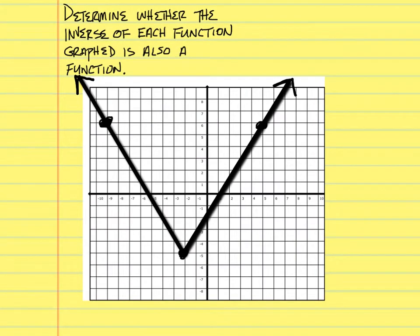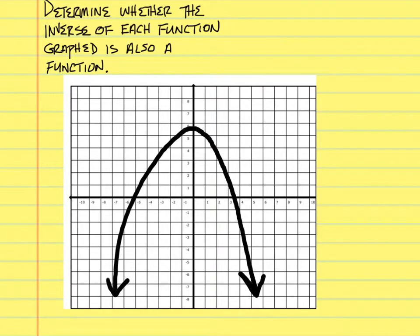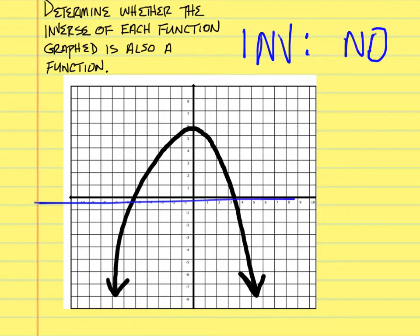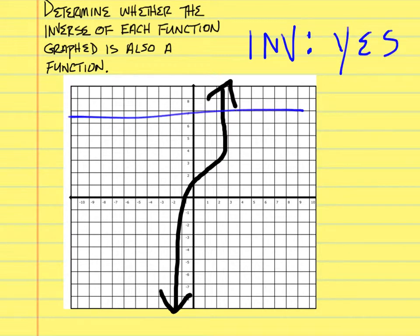Is the inverse of this a function? No, it is not — the horizontal line test shows it crosses in at least two places, so the answer is no. Is the inverse a function, yes or no? No — it crosses in two places. What about this one — is the inverse a function? Yes. The horizontal line crosses here, here, here, here, and here — just one spot each time. The inverse is a function.